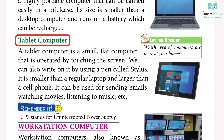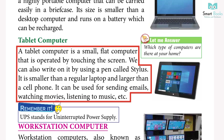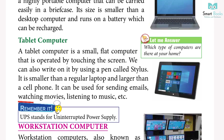Tablet computer: a tablet computer is a small, flat computer that is operated by touching the screen. We can also write on it using a pen called a stylus. It is smaller than a regular laptop and larger than a cell phone. It can be used for sending emails, watching movies, listening to music, etc. Remember: UPS stands for Uninterrupted Power Supply.